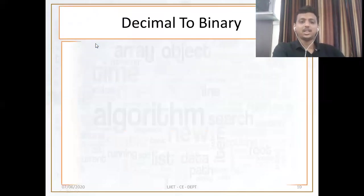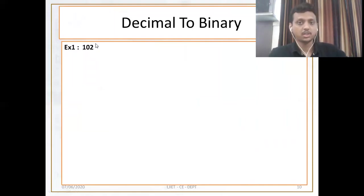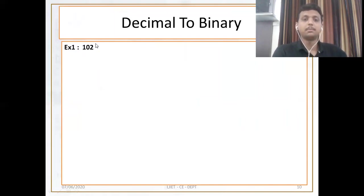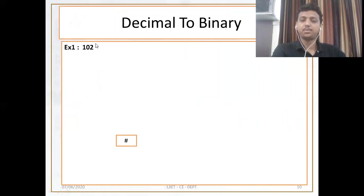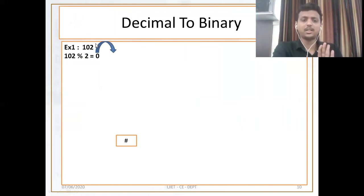I am taking another example: 102. This is the last example for decimal to binary conversion. Please make sure your focus is only on this video. First step: initialize the stack — I am pushing hash. Next, find out the remainder: 102 mod 2, I get 0. Push 0 inside the stack.